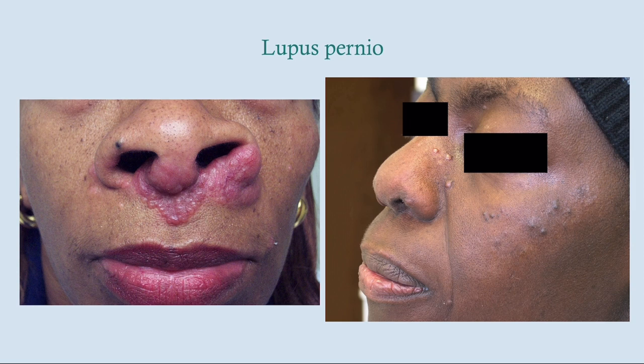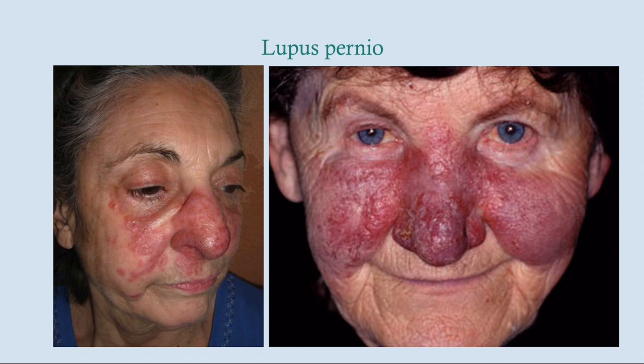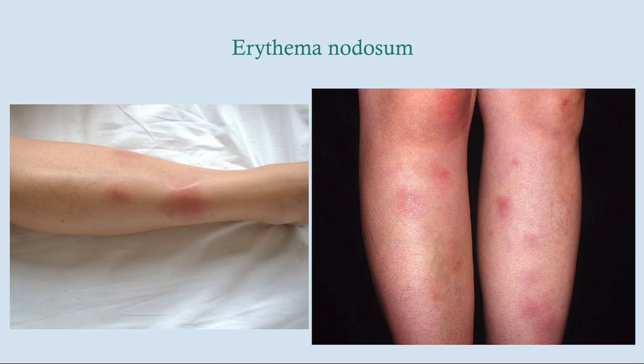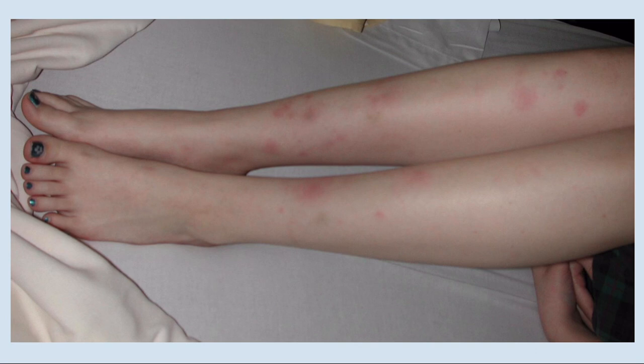Lupus pernio appears as very indurated plaques, rough and tense to palpation, occurring around the nose, cheeks, lips, and ears. Erythema nodosum appears as large, welt-like lesions on the legs — typically the shins — almost resembling small abscesses. These lesions tend to be painful on palpation.